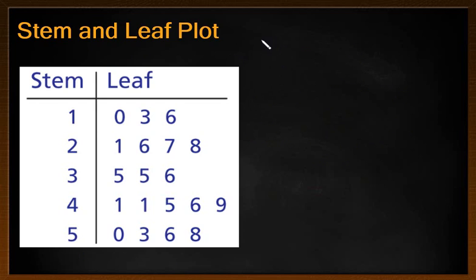Now, often with a stem and leaf plot, what they give you is what we often refer to as a key. And they might say something like 2 slash 1 equals 21 years old or 21 years. It can be lots of different things. So what is a stem and leaf? Well, a stem and leaf graph is separated into two different numbers.